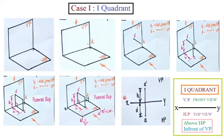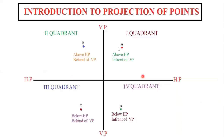So just see here — we are going to represent only like this. In the first quadrant the concept is: front view will be falling on VP and top view will be falling on HP. So above HP and in front of VP — this point is above HP in front of VP. This is clearly explained.